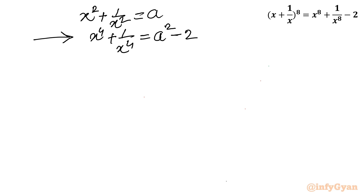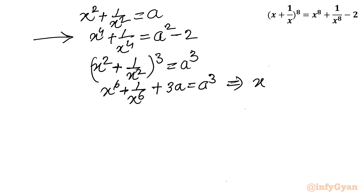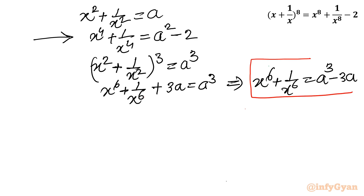Now I will take the cube of the same equation to get the value of x^6 + 1/x^6. Using the identity (a^3 + b^3) + 3ab(a+b), we get x^6 + 1/x^6 equals A^3 minus 3A. Remember this result — we are going to substitute it into the equation.